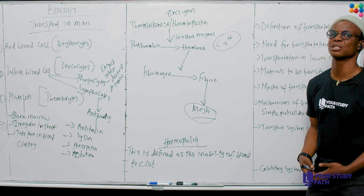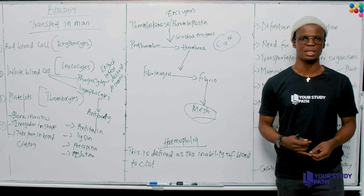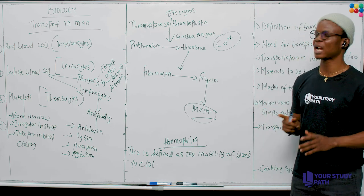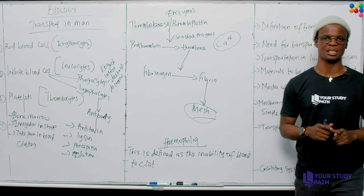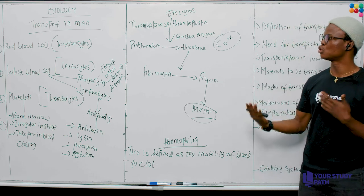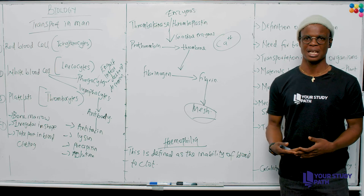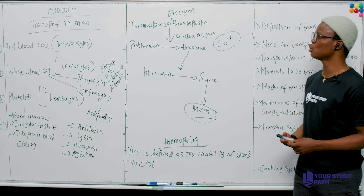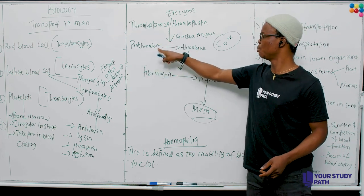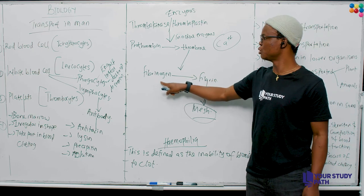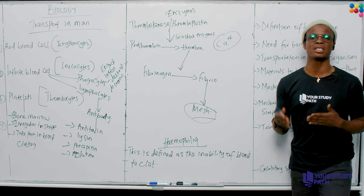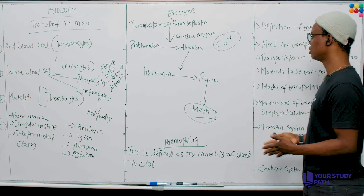Repeating the process of blood clotting because it commonly appears in exam questions: first, thrombokinase or thromboplastin is released; then it converts prothrombin to thrombin; thrombin converts fibrinogen to fibrin; and fibrin forms a mesh that closes the cut. The sequence is: thrombokinase → prothrombin → thrombin → fibrinogen → fibrin.